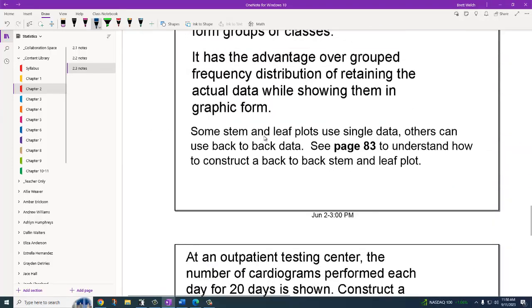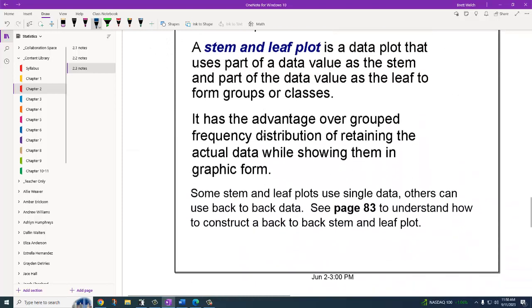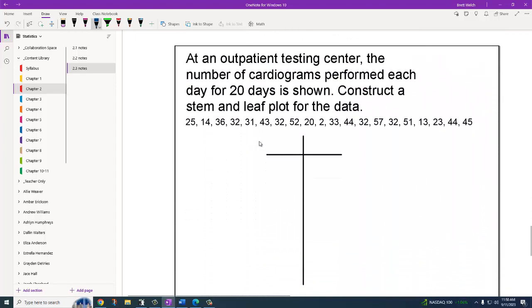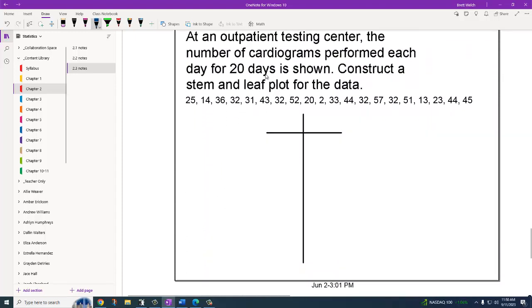The last type is what's called a stem and leaf plot. It's kind of a combination of a histogram and frequency distribution where you build a table. When we do this specific example, we're doing cardiograms performed for a day for 20 days. I'm going to put the tens over here in my stem and the ones over here in my leaf. I'm going to look for my lowest number, which is 2. So I would start at 0, 1, 2, and I go all the way up to my biggest number which is 57. So then 3, 4, 5.